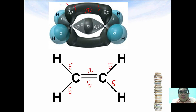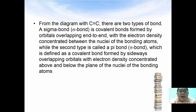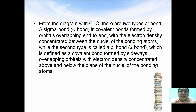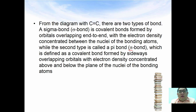This is how the ethene molecule is explained. In the C=C double bond, there are two types of bonds. A sigma bond is a covalent bond formed by direct end-to-end overlapping, with electron density concentrated between the two nuclei of the bonding atoms. A pi bond is a covalent bond formed by sideways overlapping orbitals, with electron density concentrated above or below the plane of the nuclei of the bonding atoms.